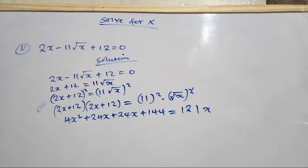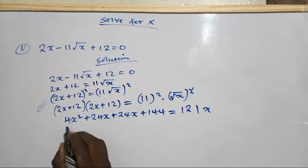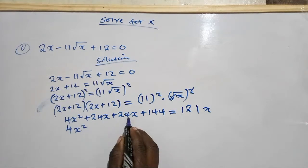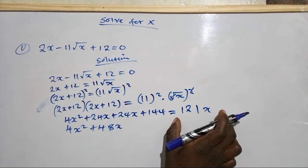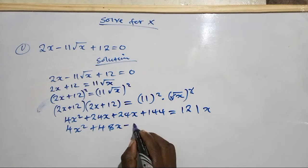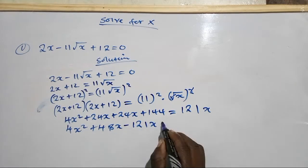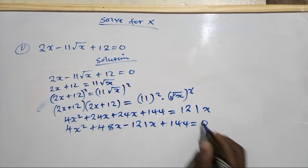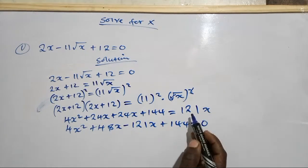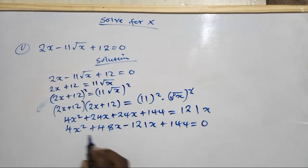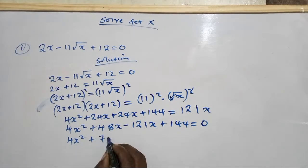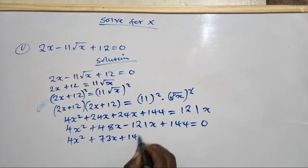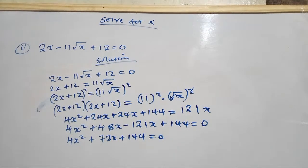Now collect the like terms. We have 4x squared, and 24x plus 24x gives 48x. Then subtracting 121x from both sides gives minus 121x. So 48x minus 121x gives minus 73x plus 144, which equals zero. Now this is a quadratic equation.